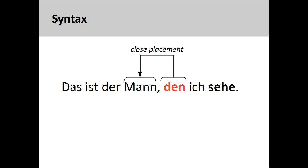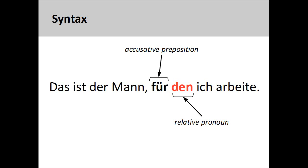Finally, there are a few important syntactical features of relative clauses that need to be addressed. First, it is important to place the relative pronoun and clause as close as possible to the antecedent that they modify. In the sentence you see on the screen, the relative clause comes right after the noun "Mann." If, however, a preposition is used to modify the relative pronoun, this preposition will be placed immediately before the pronoun. In the sentence "das ist der Mann für den ich arbeite" (that is the man for whom I work), the accusative preposition "für" comes before the accusative masculine relative pronoun "den."